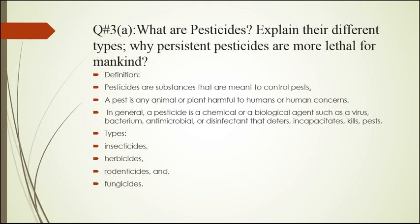Pesticides are substances meant to control pests. A pest is an animal or plant harmful to humans or human concerns. In general, a pesticide is a chemical or biological agent such as a virus, bacterium, antimicrobial, or disinfectant that deters, incapacitates, or kills pests. Types include: insecticides that kill insects, herbicides that kill herbs and shrubs, rodenticides that kill rats, and fungicides that kill fungus.